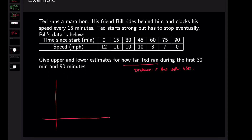We do it by making under and over estimates using this rectangle method. For the first 30 minutes, we've got data at 0, 15, and 30 minutes. Here's his velocity graph. He starts at a speed of 12 — at time equals 0 we've clocked him at 12. At 15 minutes he's been clocked at 11. And at 30 minutes he's been clocked at 10.